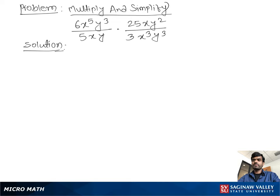Multiply and simplify: (6x^5y^3)/(5xy) times (25xy^2)/(3x^3y^3).